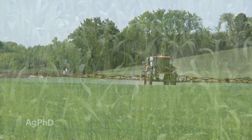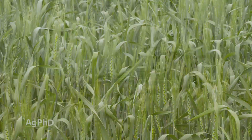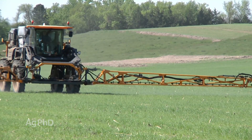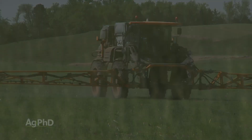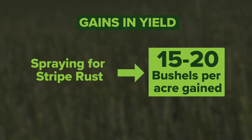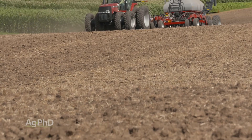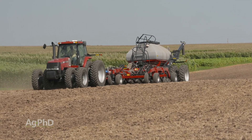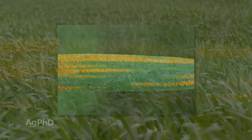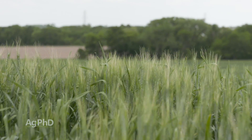The big problem with stripe rust is it takes a lot of yield. With common rust we gain a little yield from spraying, but with stripe rust we're often gaining 15 to 20 bushels — it's a huge deal. The two big questions are: when exactly should I spray, and which fungicide should I use? The other question is which variety of wheat to plant — there are some differences in tolerance or even resistance. However, stripe rust adapts pretty quickly, so varieties that were great a few years ago are now getting infected. Stay in touch with research being done in your area to find the best variety.